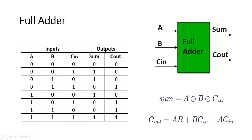As we know, a full adder has three inputs — A, B, and C_in — and two outputs: Sum and C_out. From the truth table of a full adder, we can easily derive two equations. For Sum: Sum = A XOR B XOR C. For C_out: C_out = AB + BC + CA.